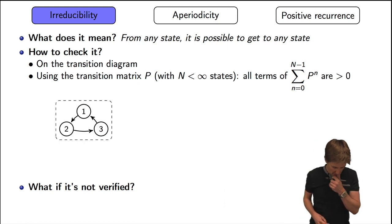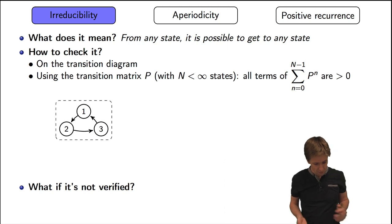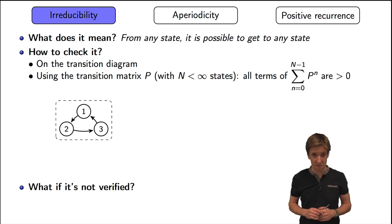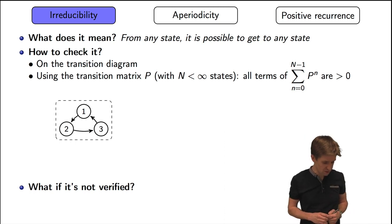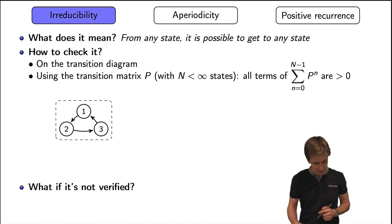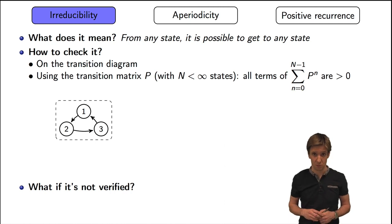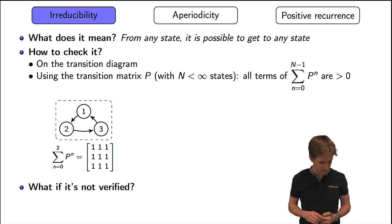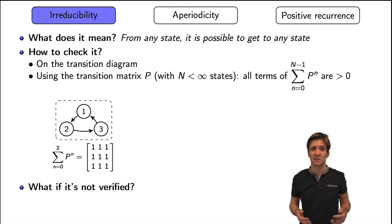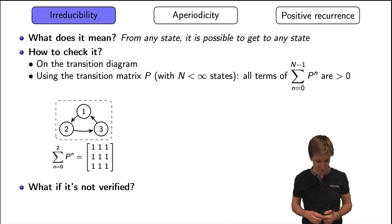So let's see on a few examples. We have here a Markov chain with three states. From state one, we are able to reach state two directly and state three in two steps. Same thing from state two and state three. So this chain is irreducible. We could also check that using the condition on the matrices: P to the power zero plus P plus P squared gives a three-by-three matrix made only of ones, so the condition is satisfied.